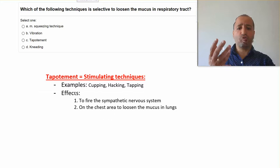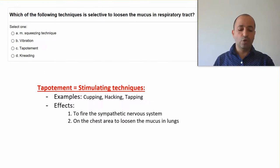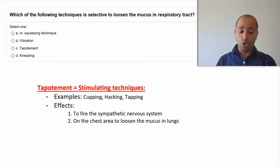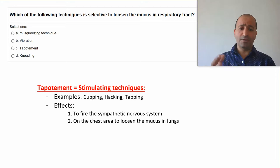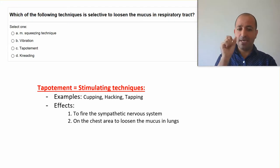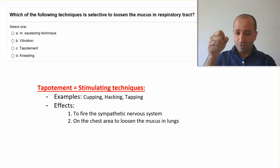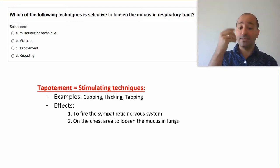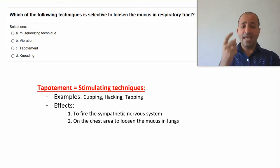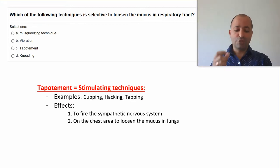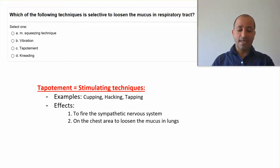Each of the following techniques is selective to loosen the mucus in the respiratory tract, which occurs in chronic bronchitis — for example, they have thick mucus inside the airways that you need to get rid of — or in a disease we call cystic fibrosis, a genetic disease where they produce so much thick mucus inside the airways.